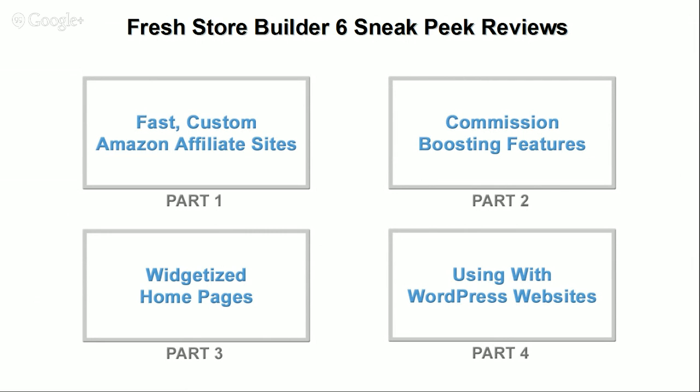Simply put, FreshStore Builder 6 is the best way to create Amazon affiliate websites. It not only has a strong emphasis on creating unique content for better search rankings, and actually guides you through that process along the way.